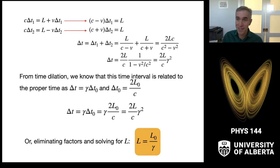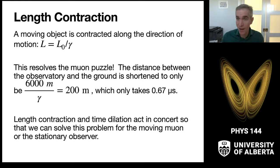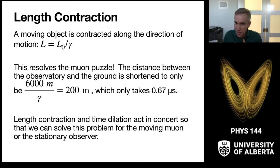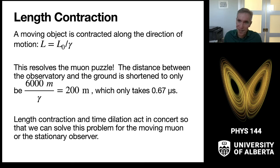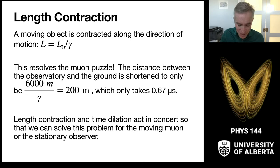The combination of length contraction and time dilation act in concert to keep the universe self-consistent. From the muon's perspective, the 6,000-meter distance is contracted by gamma — and that gamma factor is 30 — leaving only 200 meters of apparent distance, taking only 0.67 microseconds. Only about 20% of muons decay, matching observations. Length contraction and time dilation together reconcile what both observers measure.